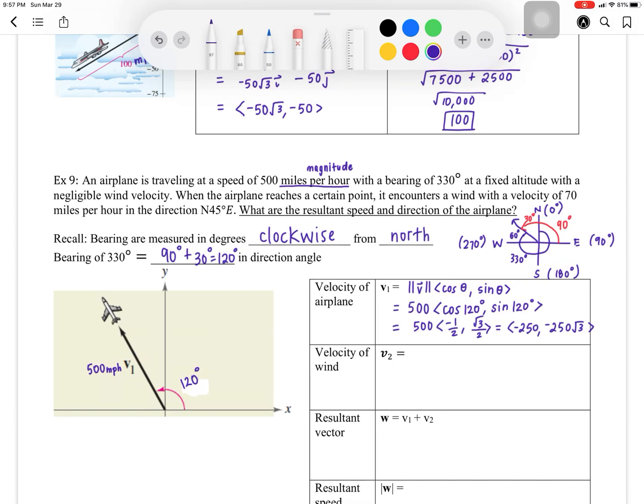Next, you need to find the velocity of the wind. The wind is going 70 miles per hour in the direction north, 45 degrees east. So since it's only 70, I'm going to draw a smaller arrow here. And we know that, let's say this is north, this is east. And the direction was, the bearing was north, 45 degrees east. So from here to here was 45 degrees. That means this is also 45 degrees.